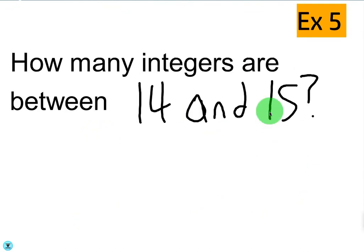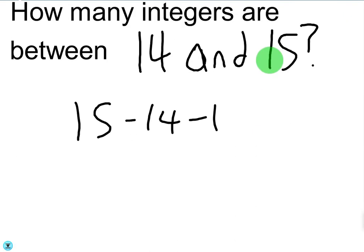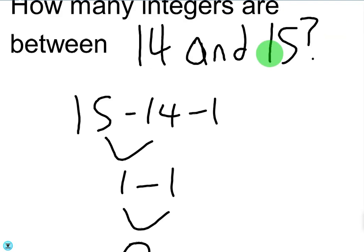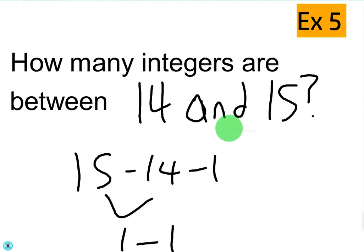How many integers are between 14 and 15? This one's pretty obvious — there are no integers between 14 and 15. Using the rule: the bigger minus the smaller minus 1 becomes 1 minus 1, which is 0. This verifies that there are no integers between 14 and 15. There are fractions, but not integers, which makes sense because the difference between them is only 1.